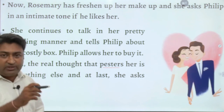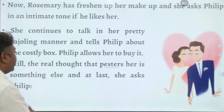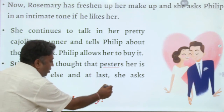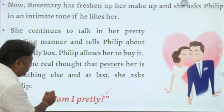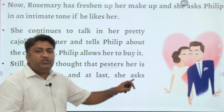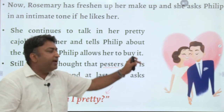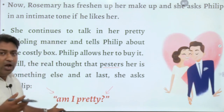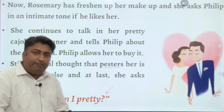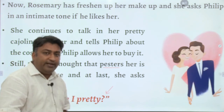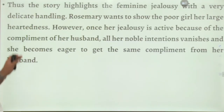Rosemary asks Philip in an intimate, cajoling tone whether he likes her. Philip answers positively. She also tells him about the costly enamel box, and Philip allows her to buy it. But the real thought pestering her is something else entirely. The very last line of the story is Rosemary asking Philip: 'Am I pretty?' — which really means she wants to know: 'Am I prettier than the girl?'